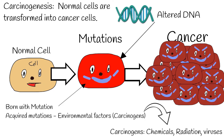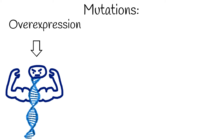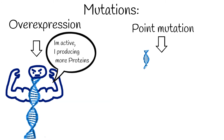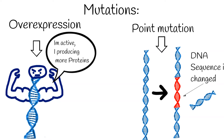Mutation can be several types. Overexpression means hyperactivity or unregulated activity of the gene. Point mutation occurs when a single nucleotide is changed, inserted, or deleted from a DNA. The result of a point mutation can be different — a gene can be activated or deactivated, its function can change, or there may be no effect at all.